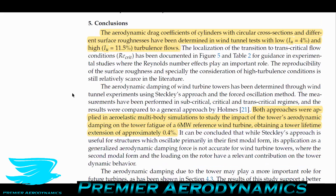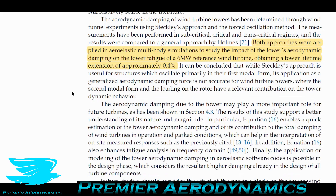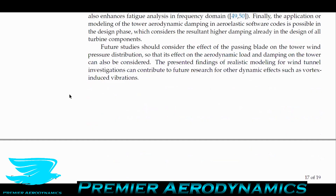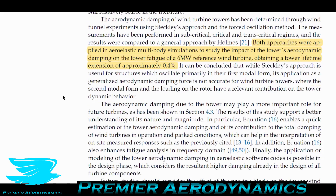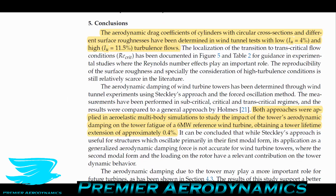In conclusion, the aerodynamic coefficients of cylinders with circular cross-sections and different surface roughnesses were determined in wind tunnel tests with high turbulence intensities. For a 6 megawatt wind turbine, increasing the damping ratio by 0.7% can increase the lifetime expectancy by 0.4%. Make sure to like, subscribe, and share with anyone interested in wind turbines.